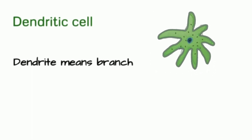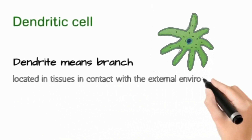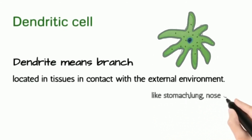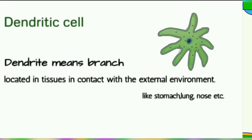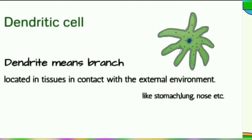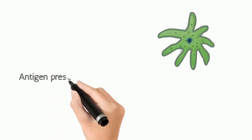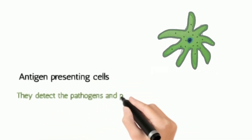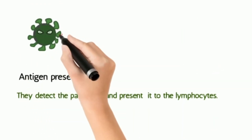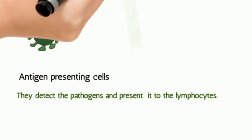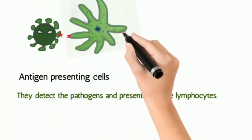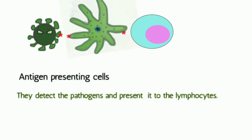Dendritic cells — the word 'dendrite' means branches — have branch-like projections on the cell. They are found in tissues in contact with the external environment, such as the nose, lungs, skin, stomach, and intestine. Dendritic cells are antigen-presenting cells (APCs); they capture foreign bodies (antigens) and present that information to lymphocytes. Langerhans cells are a type of dendritic cell.